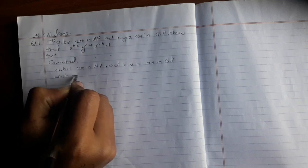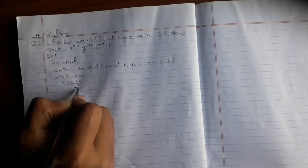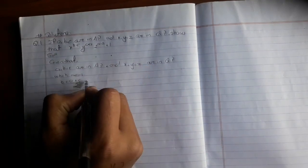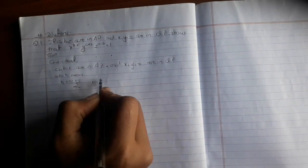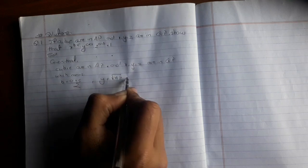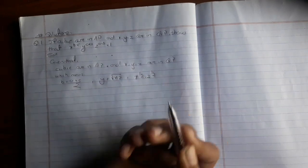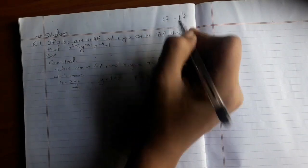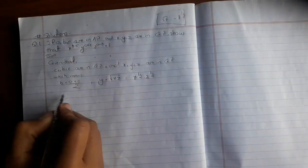B is equal to A plus C divided by 2. Y is equal to X. Z equals X to the power 1 by 2 into 2 to the power 1 by 2. Root X is equal to X to the power 1 by 2.